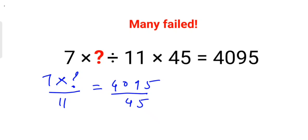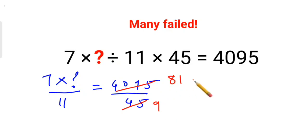Now we can simplify 4095 divided by 45. Both numbers end in 5, so both are divisible by 5. After dividing by 5 we get 819 divided by 9, and since 8+1+9 equals 18, it is divisible by 9 as well. So this simplifies to 91.